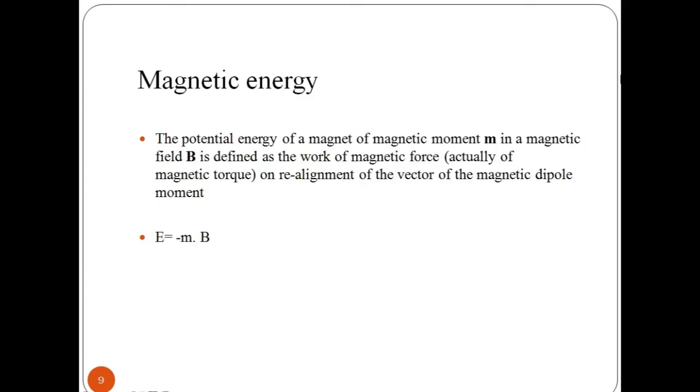Magnetic energy is the potential energy of a magnet of magnetic moment M in a magnetic field B, defined as the work of magnetic force on realignment of the vector of the magnetic dipole moment. Lines are used to represent the force existing in the area surrounding a magnet. These lines are called magnetic lines of force, which are imaginary lines used to illustrate and describe the pattern of a magnetic field.